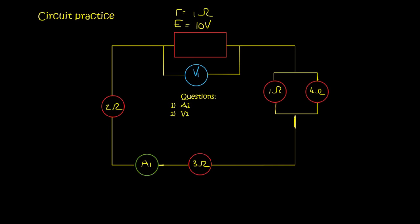Hi guys, so in this lesson we are going to be practicing internal resistance questions. So here we have a circuit, we've got a battery, we've got a 2 ohm resistor, a 3 ohm resistor, we've got some parallel combination, and the internal resistance of the battery is given as 1 ohm, and the EMF of the battery is 10 volts.